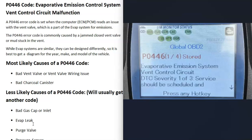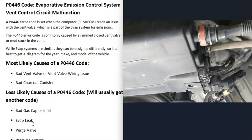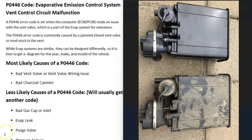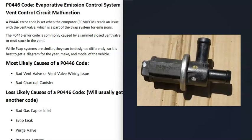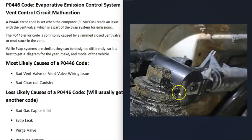The most common cause of this code is something going on with the vent valve — it either went bad or there's an issue with the wiring. The vent valve is located underneath the vehicle near the gas tank, and it's very common for it to be combined with the charcoal canister. If the vent valve is bad, mechanics often swap out the whole charcoal canister, though sometimes you can just swap out the vent valve itself. It's a fairly simple solenoid that opens and closes when the computer tells it to. Sometimes they can be separate, so keep that in mind.